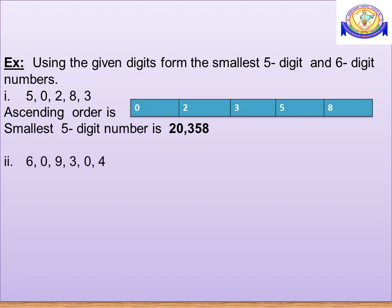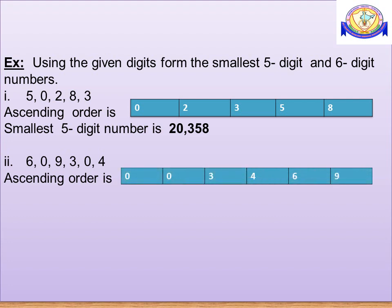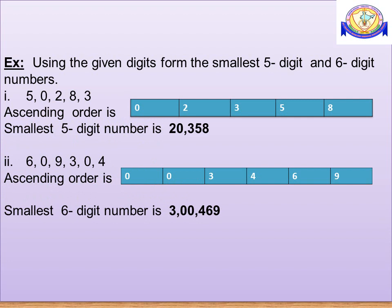Similarly, consider 6 digits: 6, 0, 9, 3, 0, 4. Ascending order is 0, 0, 3, 4, 6, 9. Children, if we write 0 at both the lakhs place and 10,000th place, it becomes a 4-digit number. Therefore, the smallest 6-digit number is 3,04,69.